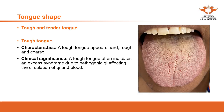Firstly, we are going to talk about the tough and tender tongue. A tough tongue appears hard, rough, and coarse. As you can see from the sample image, the tough tongue is dry and looks hard and rough on top — it is not smooth. The indication of a tough tongue indicates excess syndrome due to pathogenic qi. Mostly a tough tongue appears in an excess syndrome, which can be either cold or heat.